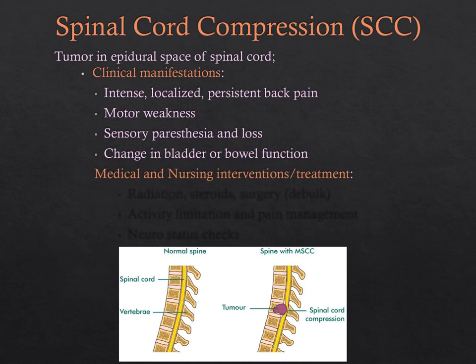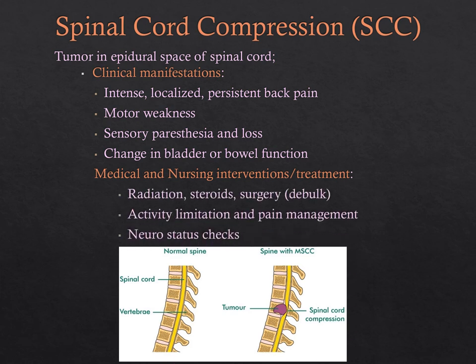Spinal cord compression occurs when a tumor is in the epidural space of the spinal cord. Clinical manifestations include intense localized persistent back pain, motor weakness, sensory paresthesia, and changes in or loss of bowel and bladder function. Interventions include radiation, steroids to decrease tumor size, or surgery to debulk the tumor, along with activity limitation and pain management. Neurological checks are essential since the tumor is pressing on the spinal cord.